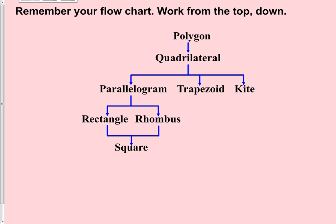Work through the flowchart from the top down. First question: do you have a polygon? A polygon is an enclosed shape built entirely out of line segments. If yes, continue; if not, you're done. Next: is your polygon a quadrilateral? Count the sides — hopefully four, which would make it a quadrilateral. If it is a quadrilateral, continue moving through the flowchart; if not, you're done with this flowchart.